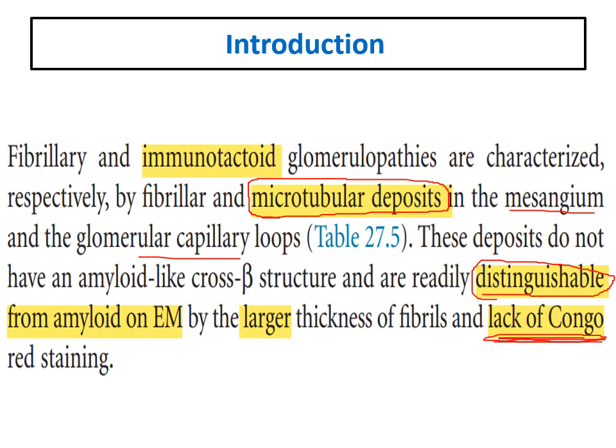Immunotactoid is characterized by large thickened tubules. So again, immunotactoid is characterized by microtubular deposition and negative Congo red stain.